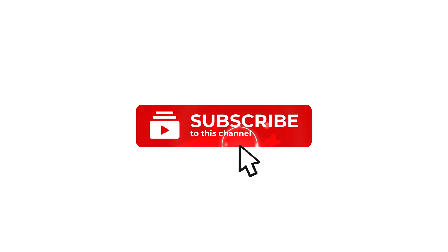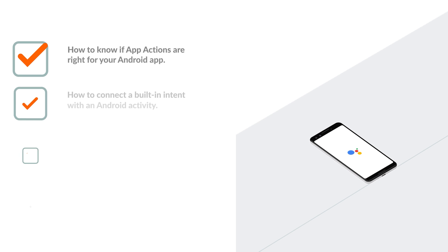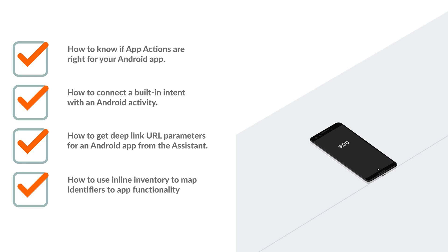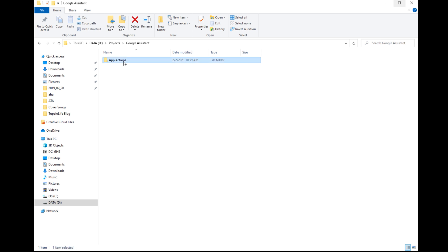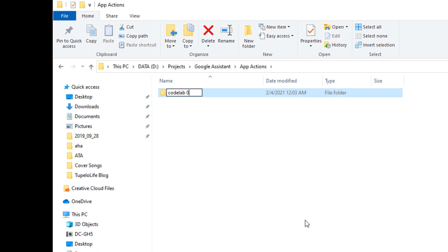The purpose of this video is to show step-by-step instructions on how to build and extend your Android applications to Google Assistant using App Actions. In this tutorial and codelab you'll learn how to know if App Actions are right for your Android app, how to connect a built-in intent with an Android activity, how to get deep link URL parameters for an Android app from the assistant, how to use inline inventories to map identifiers to app functionality, and finally how to test App Actions in Android Studio.